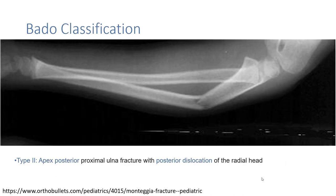This is Type 2 Monteggia fracture, where we can see a posterior proximal ulnar fracture with posterior dislocation of the radial head.